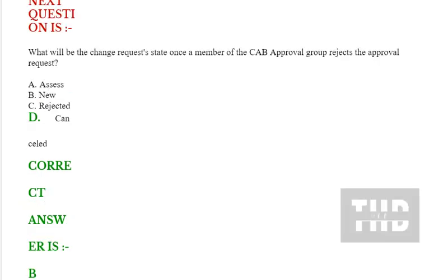What will be the change request state once a member of the CAB approval group rejects the approval request? Option A: assess. Option B: new. Option C: rejected. Option D: cancelled. Correct answer is option D.